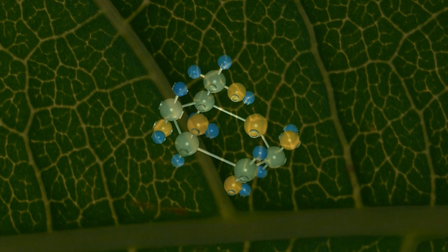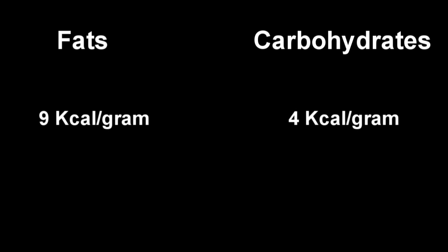In our bodies, the carbohydrates and the fats provide energy at a different rate. Fats are a high concentration of energy. One gram of fat will provide nine kilocalories of energy, whereas one gram of carbohydrates will provide four kilocalories of energy, less than half of what the fat stores.